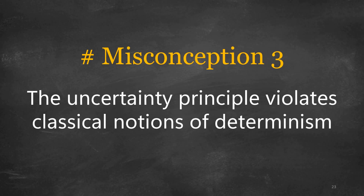The third misconception is that the uncertainty principle violates the classical notion of determinism. Classical physics is based on deterministic principles where properties of particles can be precisely known and predicted. The uncertainty principle introduces intrinsic limitations to the simultaneous measurement of certain properties in the quantum realm, but it does not necessarily violate determinism — it highlights the probabilistic nature of quantum mechanics where predictions are made in terms of probabilities rather than certainties.